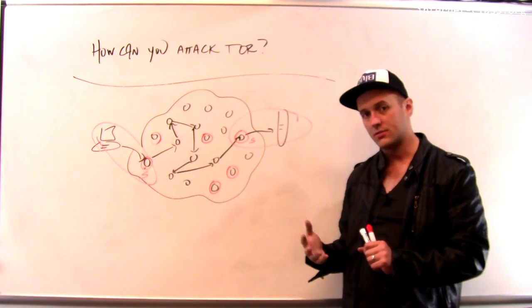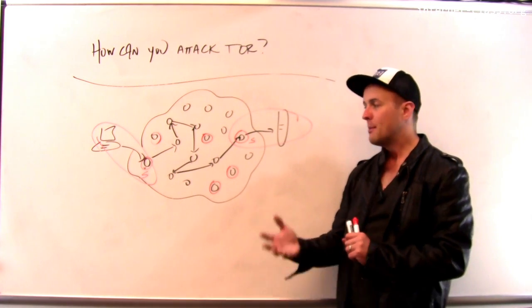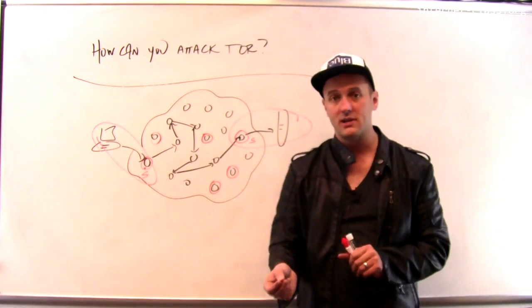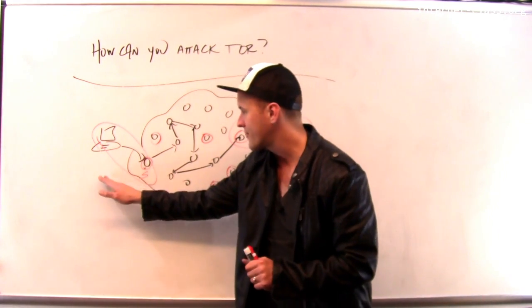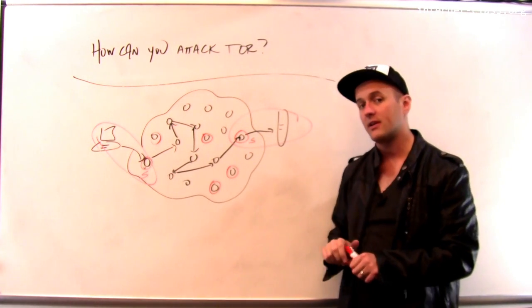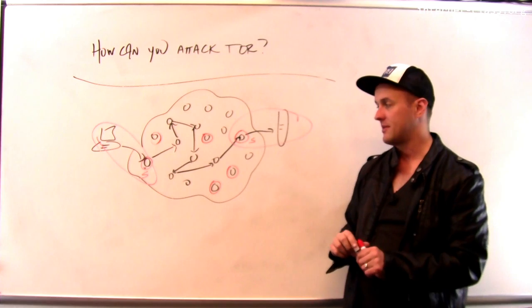Tor has since taken steps to handle this type of attack. But in general, this category of attacks, which are called traffic confirmation attacks, where basically what I want to do is confirm that Alice or whoever is using this particular site - these are very difficult to defend against from all different types of attacks.